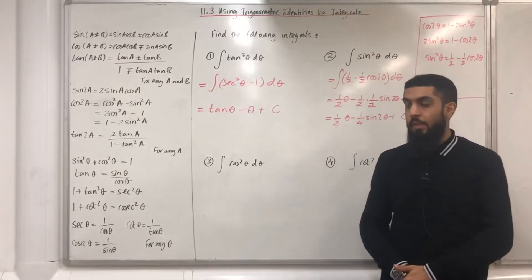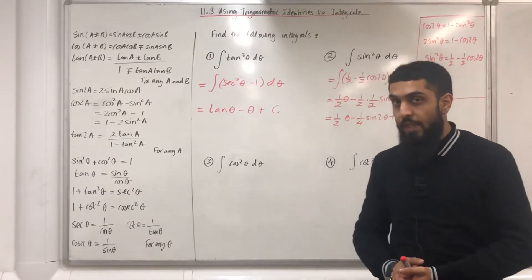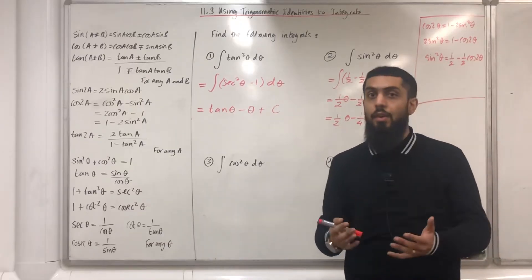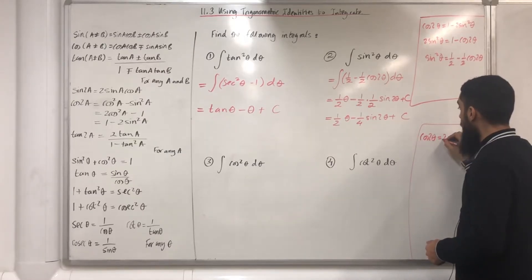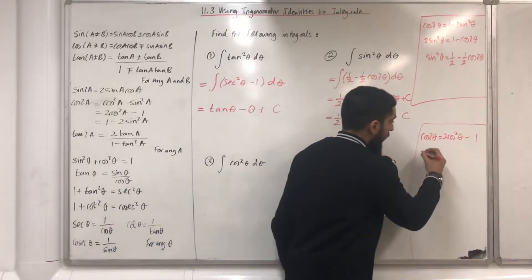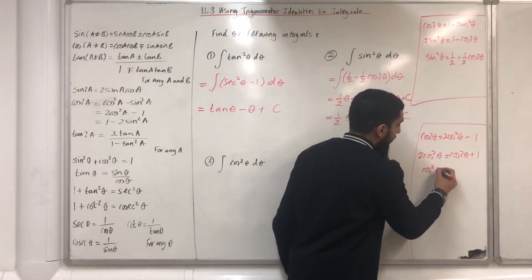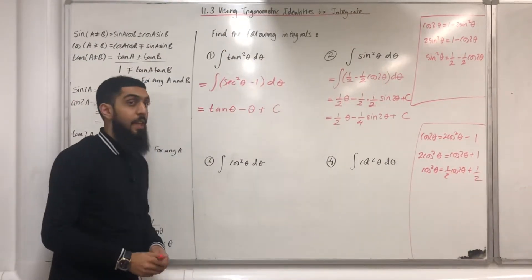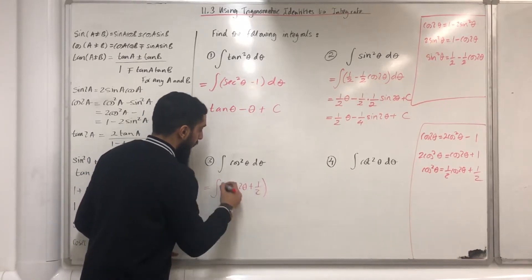Moving on to question number three: the integral of cos squared theta d theta. At the moment this can't be integrated - I need to use a specific trigonometric identity. The identity I will be using is the double angle formula for cos, in particular cos 2 theta equals 2 cos squared theta minus 1. Making cos squared theta the subject: 2 cos squared theta equals cos 2 theta plus 1, therefore cos squared theta equals one half cos 2 theta plus one half. This integral is the same as the integral of one half cos 2 theta plus one half d theta.